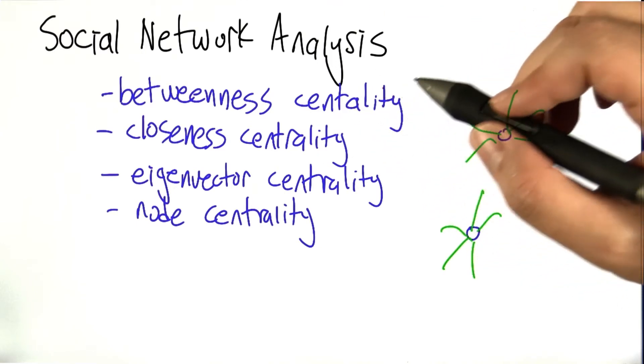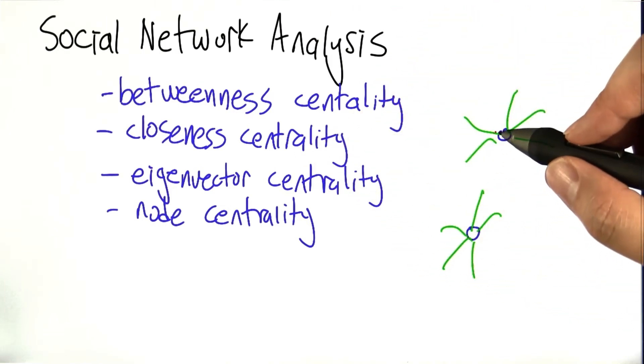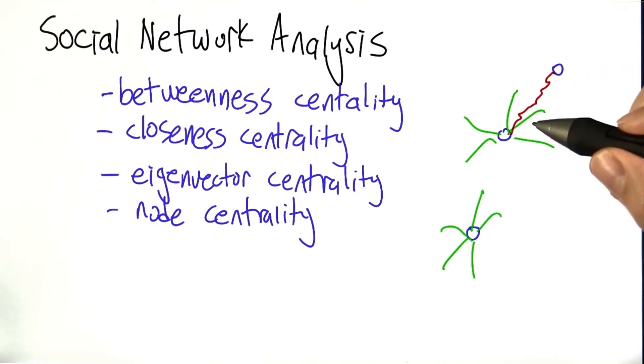One that we're going to return to, and we've already touched on, is this notion of closeness centrality, the idea that a given node is central if it has short paths to other nodes in the network.